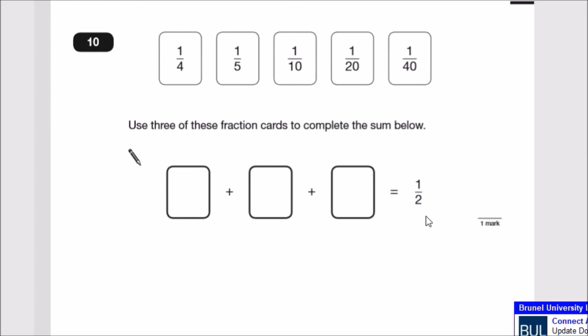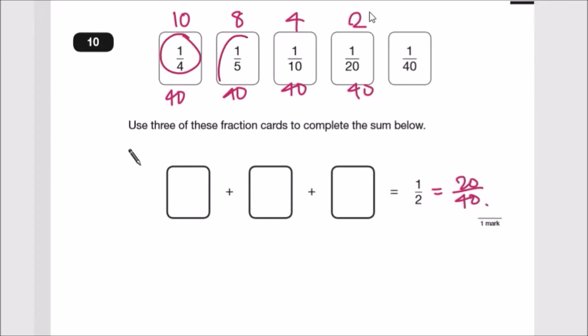Number ten: Using three cards of these fraction cards, complete the sum below. Everything needs to equal half. I'll make all this over the same denominator, which is 40. One half times up and down by 20 gives 20 over 40. Raising everything to 40: to get this to 40, multiply by 10, so 1 times 10 is 10 over 40. This becomes 8 over 40. To make 20, find three numbers: 10 plus 8 plus 2. So the cards are one tenth plus one fifth plus one twentieth.